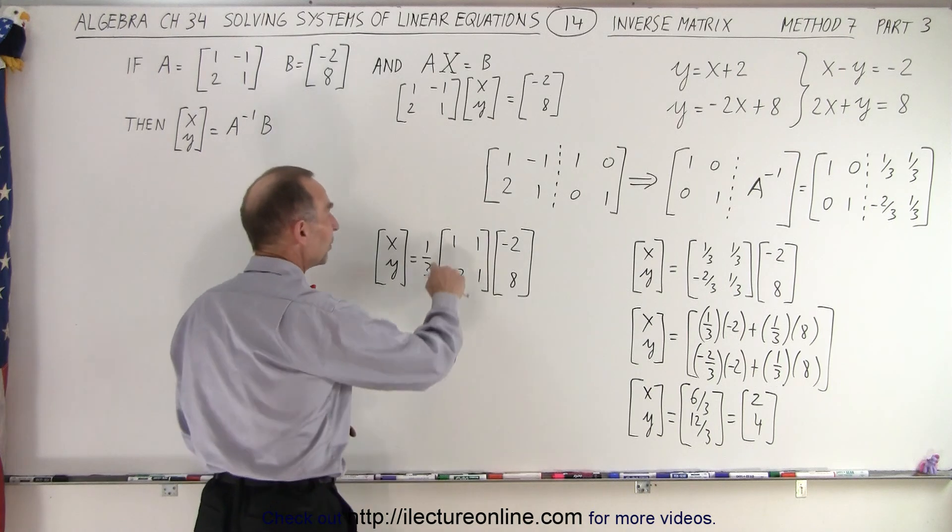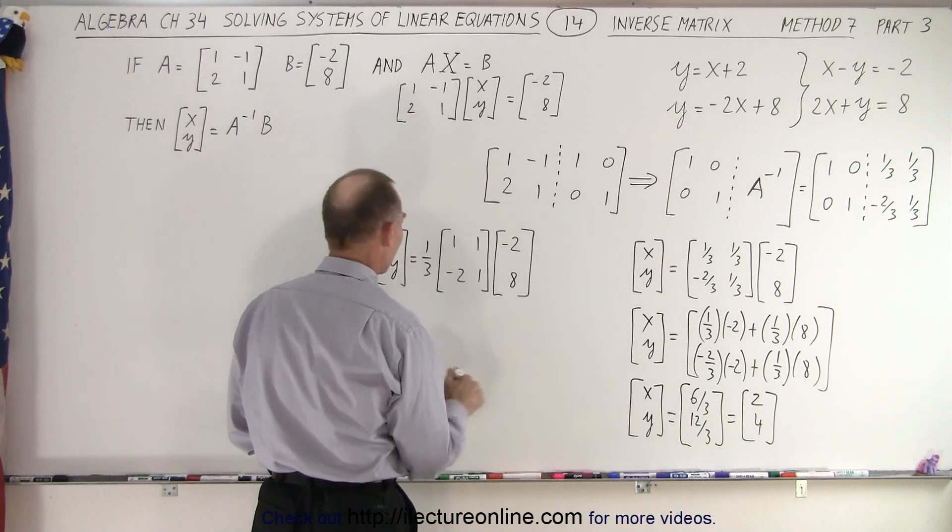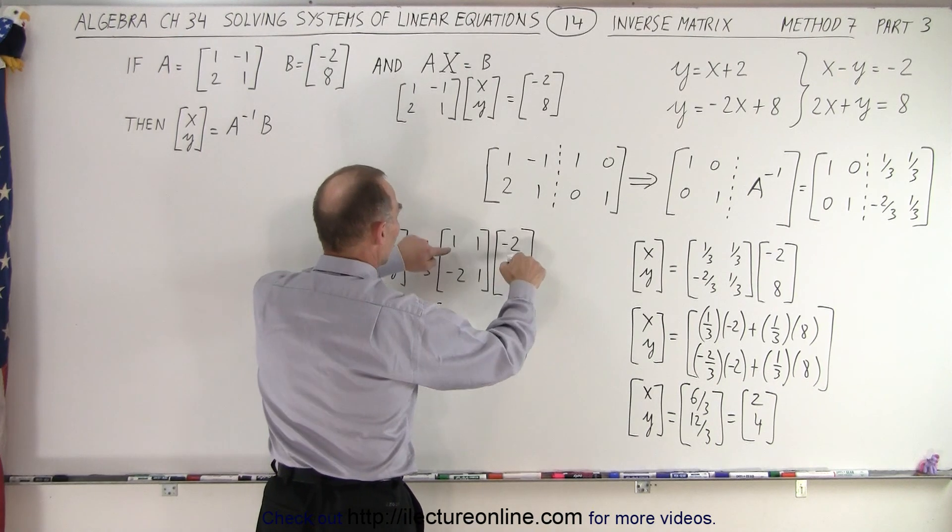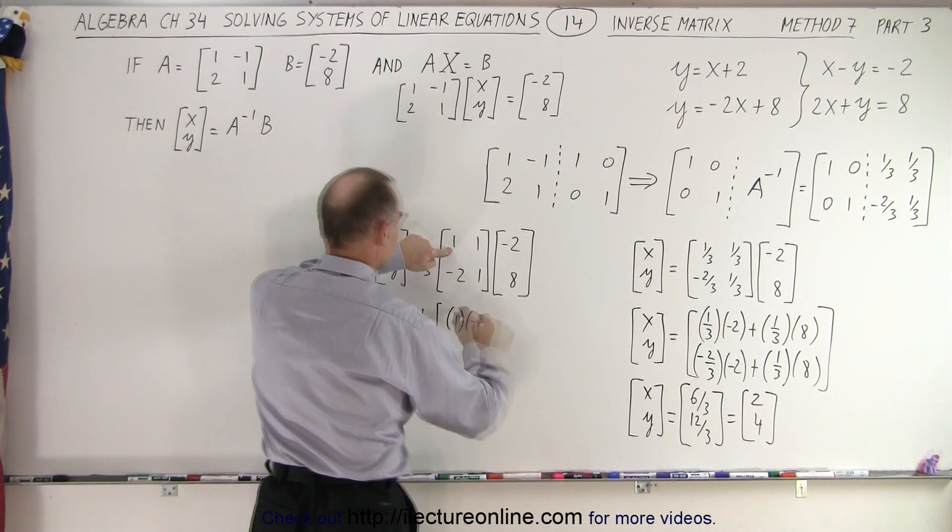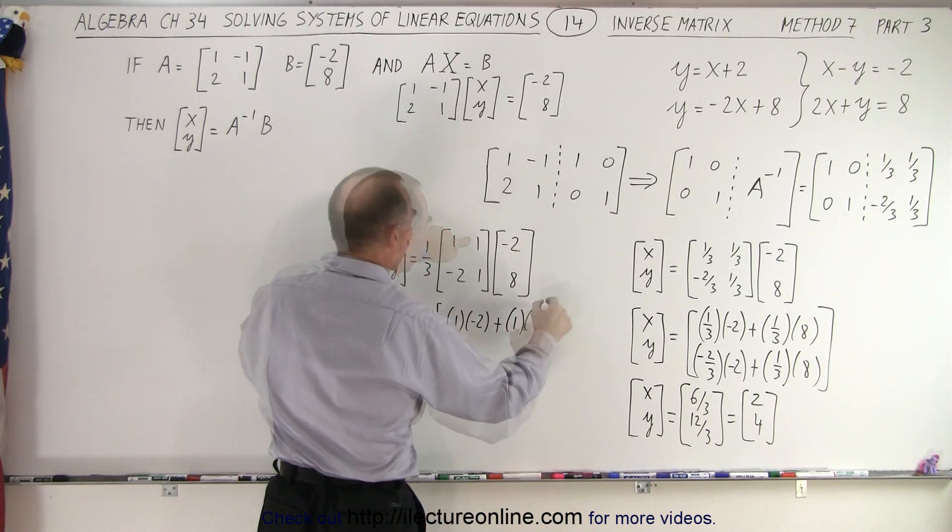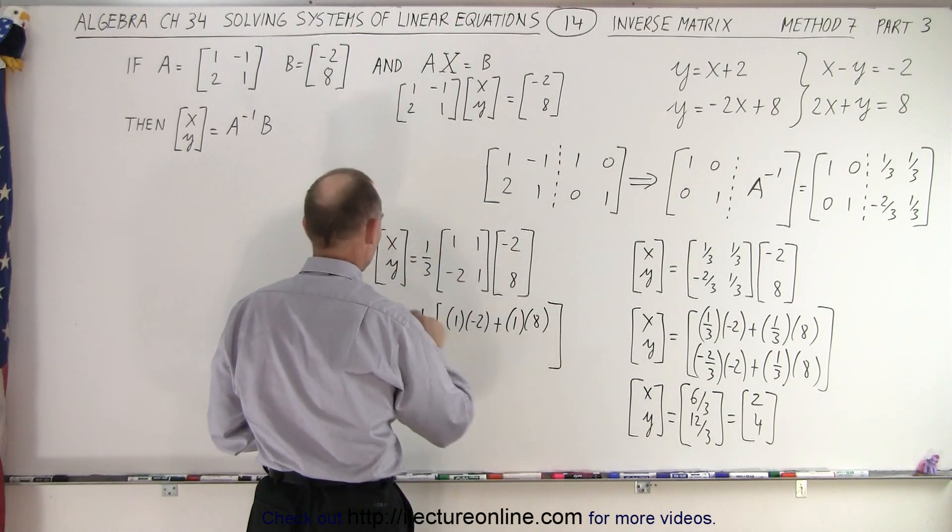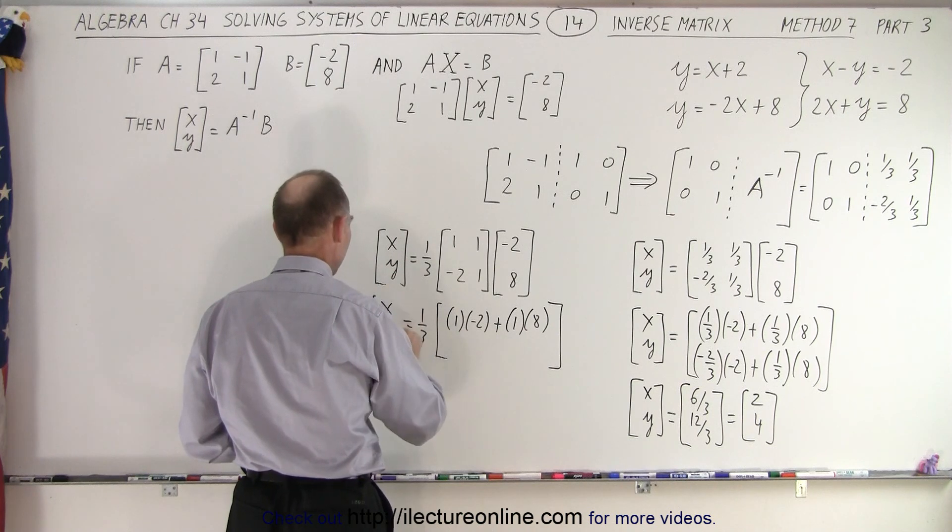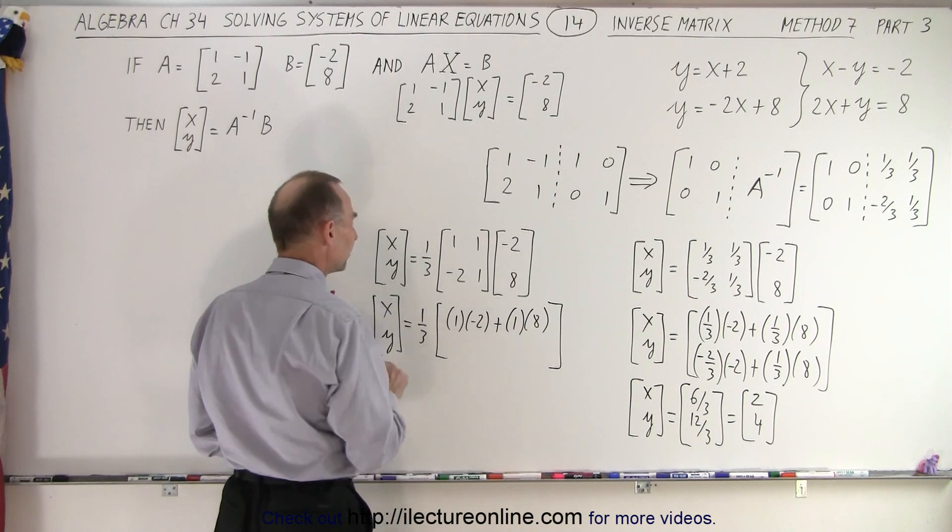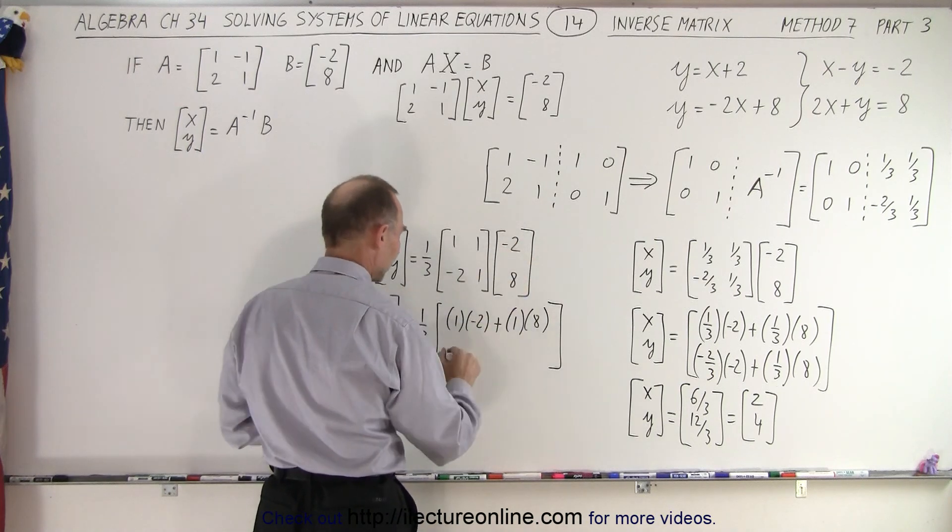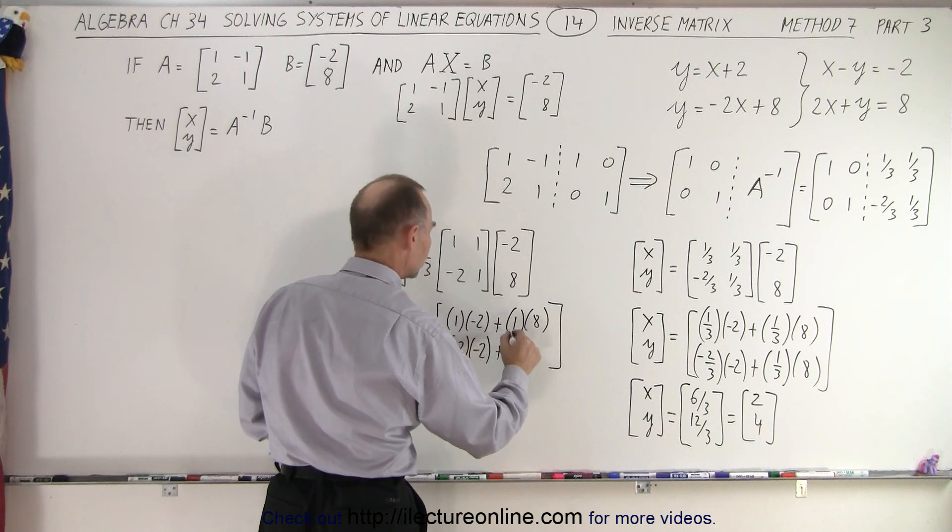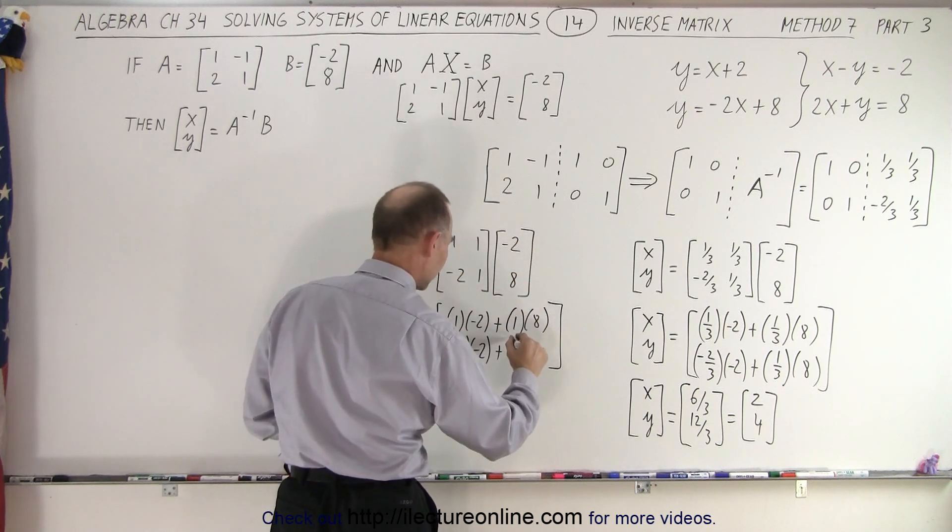Or you can do it maybe a little bit simpler here without dealing with all the fractions. So this is equal to one third times one times negative two plus one times eight. And then for the bottom numbers, because remember, this was x and y. And this should be a better equal sign. So here we have negative two times negative two plus one times eight.